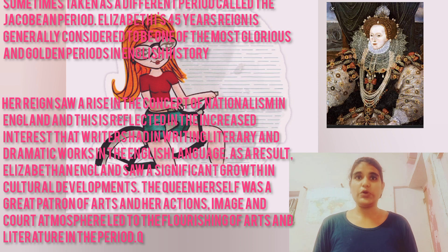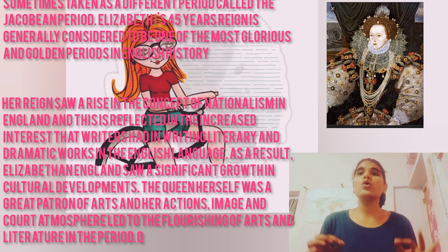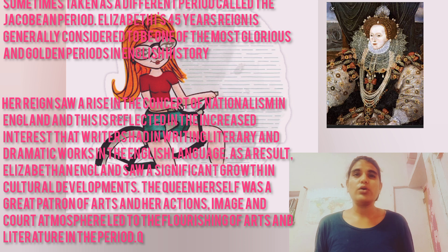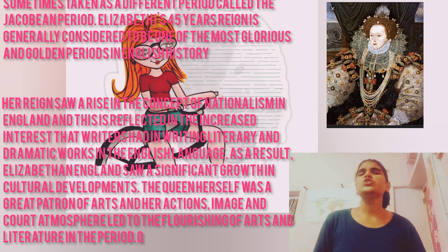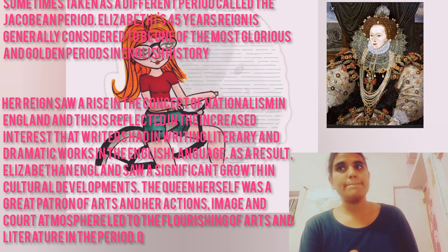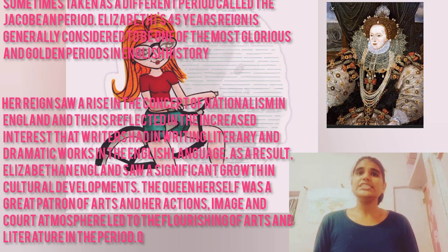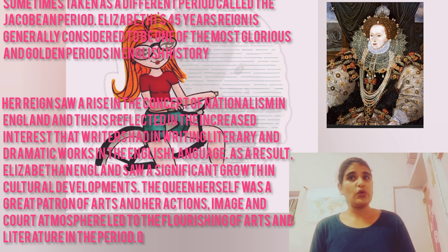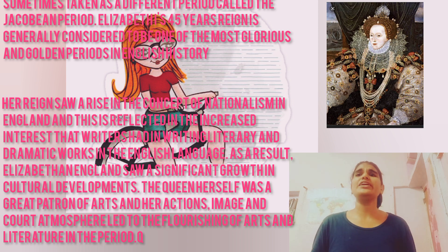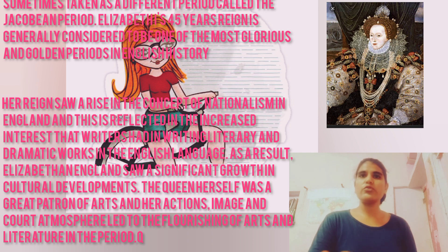The war of three kingdoms consisted of the first, second, and third English Civil Wars and was later known as the Anglo-Scottish War. Fighting took place in Scotland among other places. The Elizabethan age contained a brief period of internal peace between the War of the Roses and the Civil War.